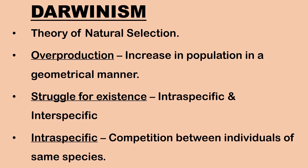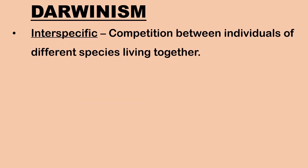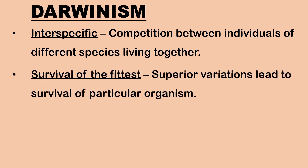Intraspecific struggle is the competition for limited resources among the individuals of the same species. Interspecific struggle is the struggle for existence between organisms of different species living together. Third, survival of the fittest: variations in organisms help them to survive. Organisms which are unable to cope with the changing environment have less adaptive traits and are unfit to survive, and finally perish or are eliminated. Organisms which show favorable variations adapt themselves to the changing environment and succeed in the struggle for existence. The superior variations lead to the survival of a particular organism and are inherited during reproduction.